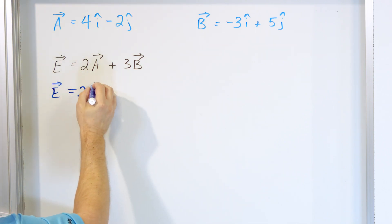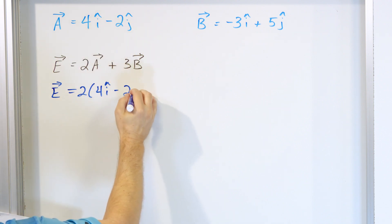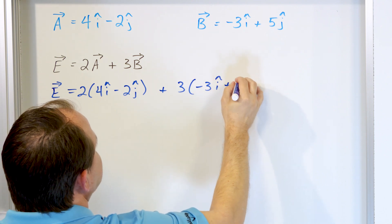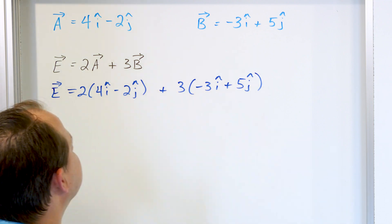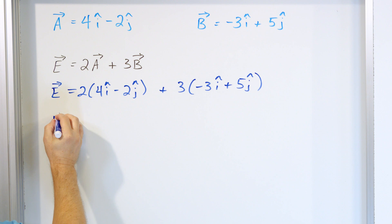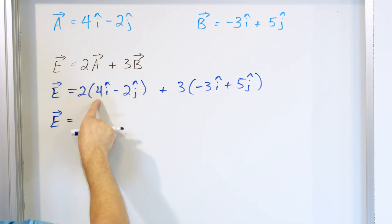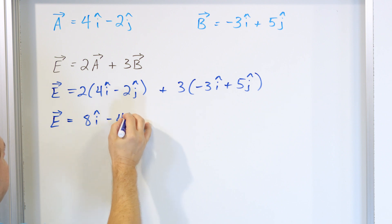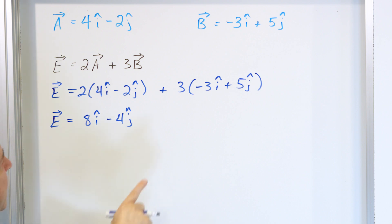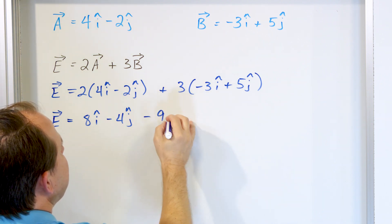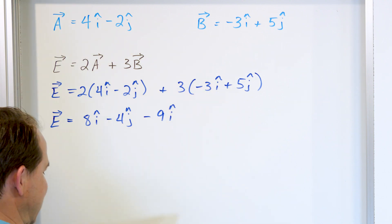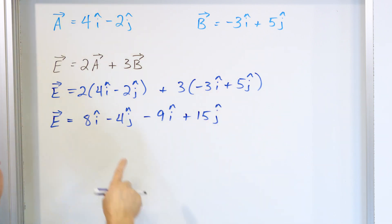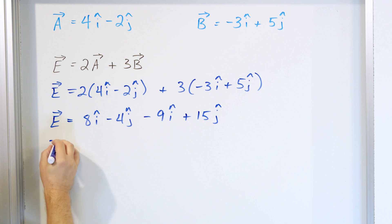Vector E is 2 times vector A — which is 4i minus 2j — plus 3 times vector B — which is negative 3i plus 5j. When we pull off the multiplication, we use the regular rules of algebra. This 2 has to be distributed in. So 2 times 4 gives us 8 in the i direction. 2 times negative 2 is negative 4 in the j direction. Over here, 3 times negative 3 is negative 9i. And 3 times 5 is positive 15j. We've done the multiplications first and arrived at this step.